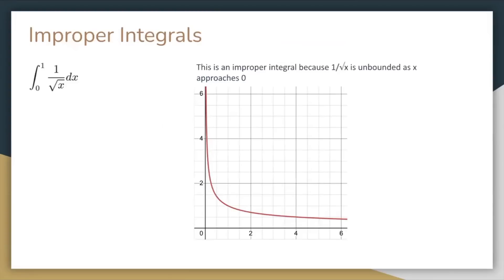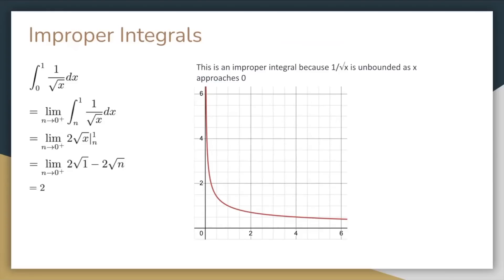Here is an example of an improper integral. 1 over square root of x is unbounded as x approaches 0, but 0 is one of our bounds of integration. To solve this integral, we would change the lower bound to n and take the limit as n approaches 0 from above. The indefinite integral of 1 over square root of x is 2 times the square root of x, and we evaluate that from n to 1. Now we can just use direct substitution to solve the limit, and we get that the answer is 2.